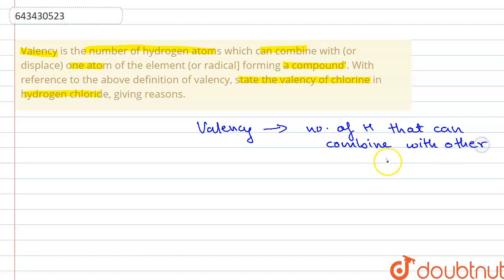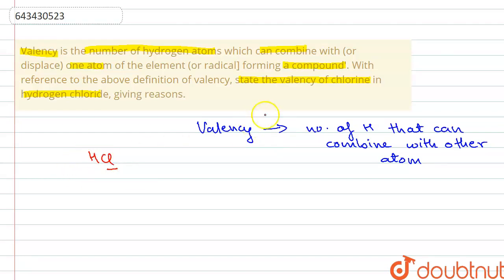Now they are asking us to calculate the valency of chlorine in hydrogen chloride using this definition of valency. Hydrogen chloride is a covalent compound.